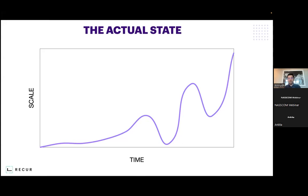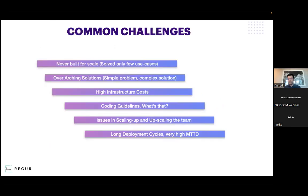Obviously we haven't been able to solve 100%, but learning is a constant process. We tried learning from those experiences, and what we'll do is share that framework with you that can help you scale up easily without wasting much time after MVP on the scale-up. What are those typical challenges that we fail at when we go from MVP to a full-fledged product? We never built for scale — that is a valid use case.